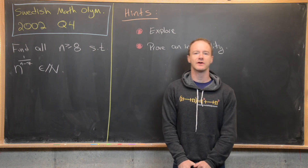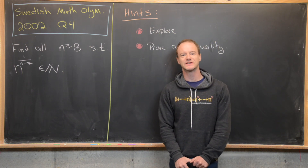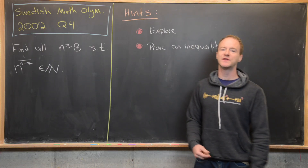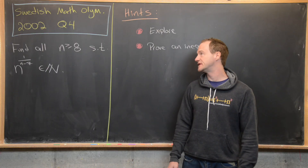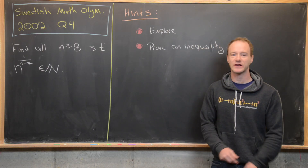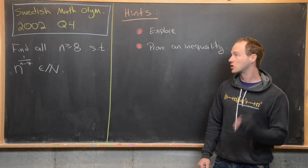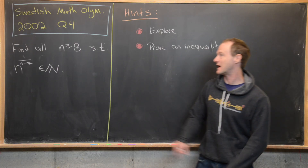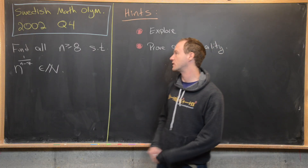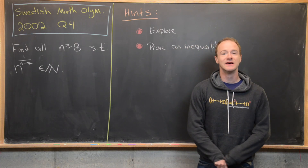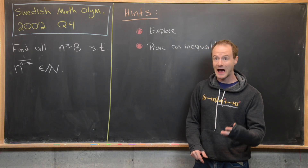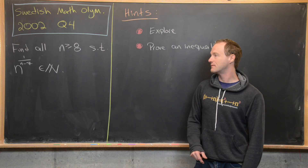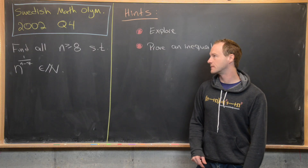Here we're going to look at a nice number theory problem from the Swedish Math Olympiad. This is from the 2002 edition, question 4. Our goal is to find all natural numbers n that are bigger than or equal to 8 such that n to the power of 1 over (n minus 7) is a natural number.